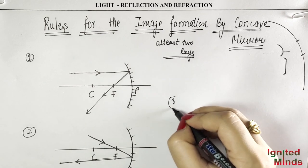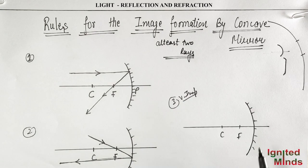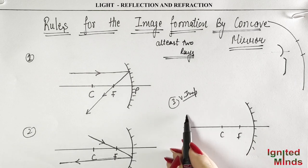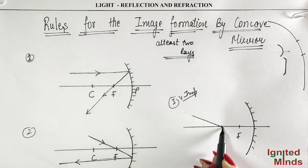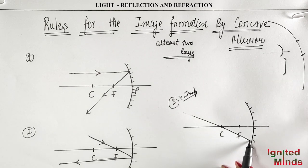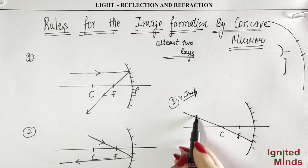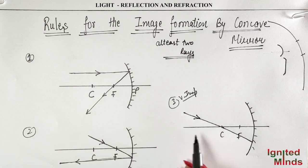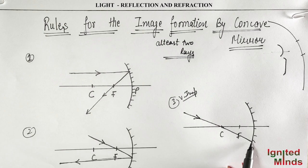And the third rule is very important. This is the principle axis. The third rule is: if the incident ray is directed toward the center of curvature, the incident ray goes to the center of curvature. So where does it reflect? It reflects back on the same path.